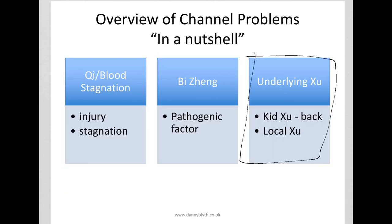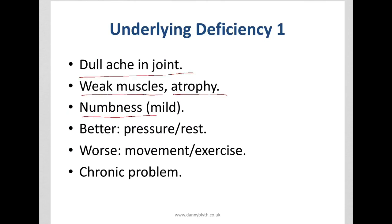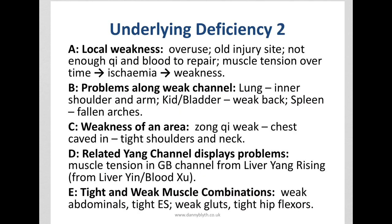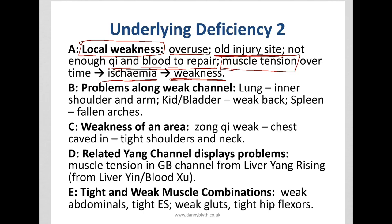Finally, underlying deficiency. We get dull aches, weak muscles and atrophy, wasting of the muscles, and mild numbness. They tend to be better with pressure and rest, worse with movement and exercise, and these are chronic problems. This might be a local weakness due to overuse — your typical tennis elbow in somebody who uses a hammer all day. This might be an old injury site that has become weakened — often you see old injury sites becoming channel problems much later in somebody's life. There might not be enough qi and blood to repair the area, such as with aches and pains in people going through chemotherapy or radiotherapy. Also over the long term, if there's long-term muscle tension this leads to ischaemia and poor blood flow which can itself become weakness — so over time problems tend to become more deficient as they become more chronic.